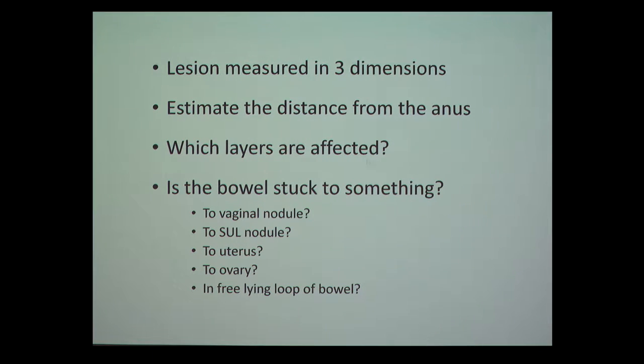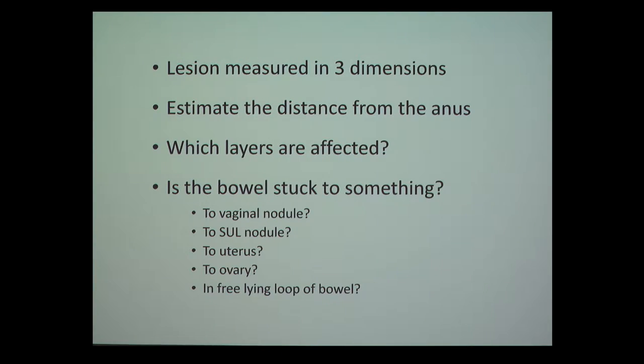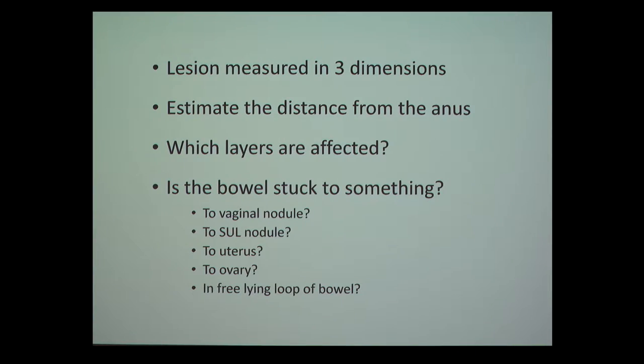When I see a bowel lesion, I measure it in three dimensions and estimate the distance from the anus. This is really important if the lesion is less than seven centimeters from the anus — at that distance it usually cannot be removed easily without a temporary colostomy because it is behind the rectovaginal septum. If it's stuck in the pouch of Douglas it's usually about 12 or 13 centimeters from the anus. I try to see which layers are affected — sometimes you can see black strands going through the submucosa layer. I also report whether it is stuck to a vaginal nodule, a uterosacral ligament nodule, the uterus, an ovary, or whether it is in a free-lying loop of bowel.